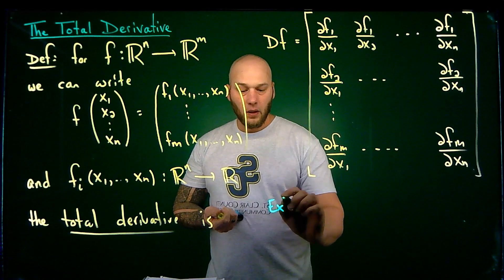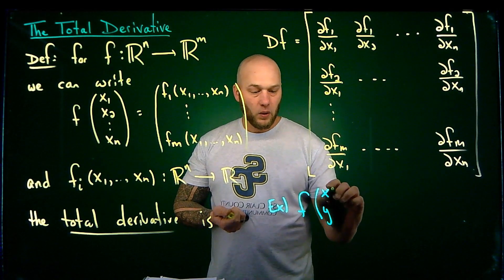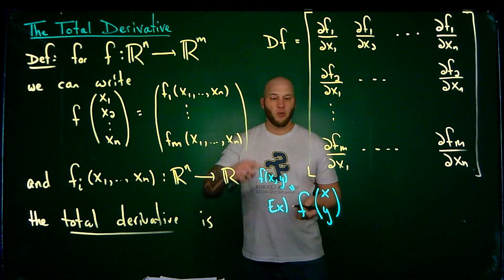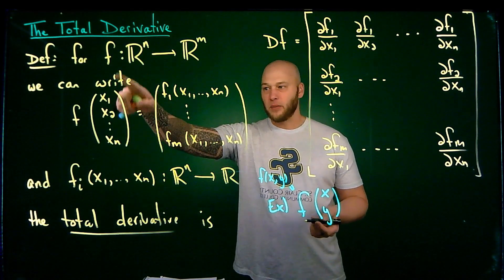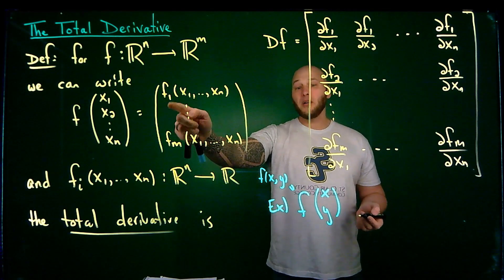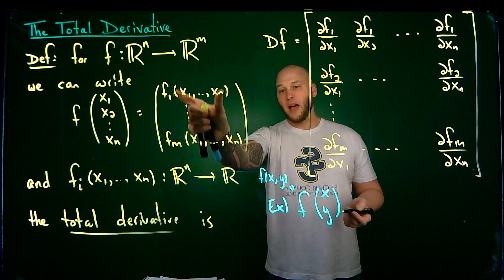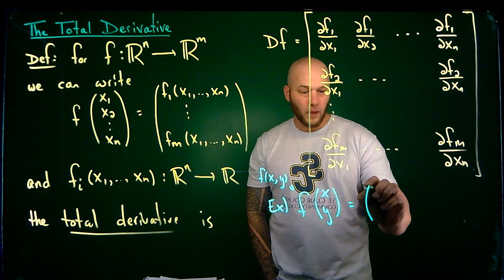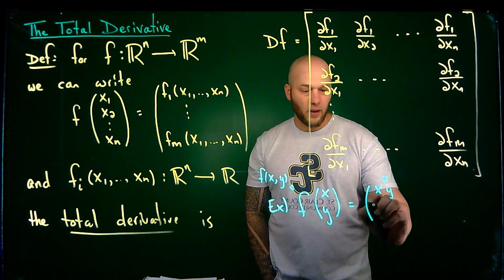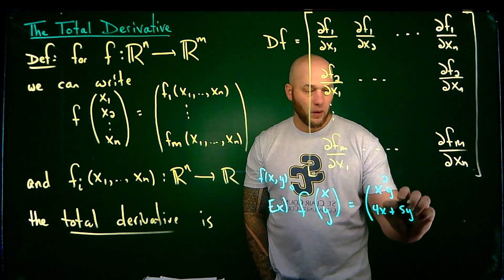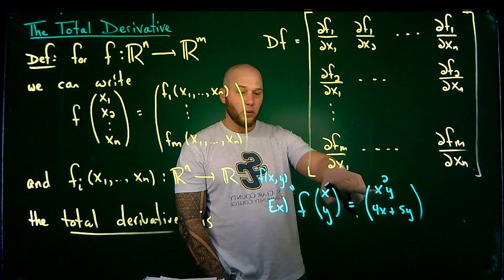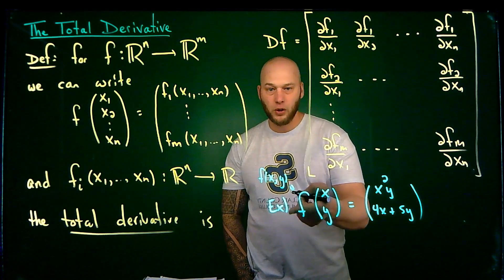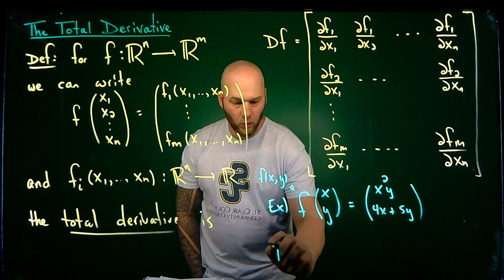Let's say I've got the following function: f of x, y — sometimes written as f of (x, y), but for notational purposes I'll write it as a stack. If I've got four or five variables, writing them as a stack is easier to read, especially when the expressions are long. And let's say this equals [x²y, 4x + 5y]. Notice that each component function depends on those variables, and this would be a function from R² to R².